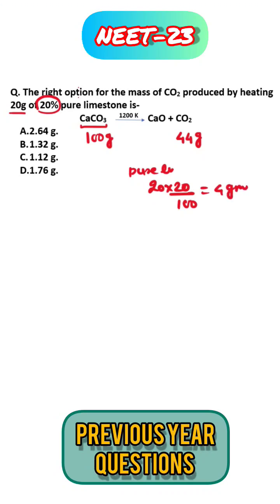This means you have to find out how much CO2 is produced after using 4 grams of CaCO3. So 100 grams CaCO3 produces 44 grams CO2.